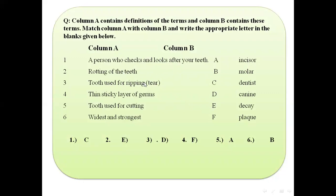Number one matches with C, number two matches with E, and number three matches with D. Number four you match with number F. Number five: tooth used for cutting. Which tooth is used for cutting? Your front tooth — incisor. Incisor is used for cutting, so number five you match with number A.